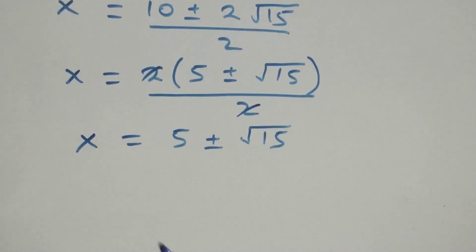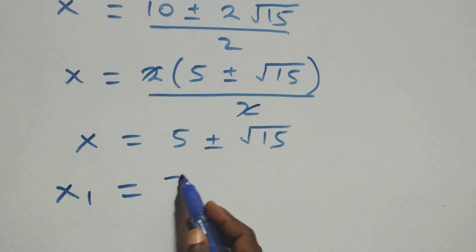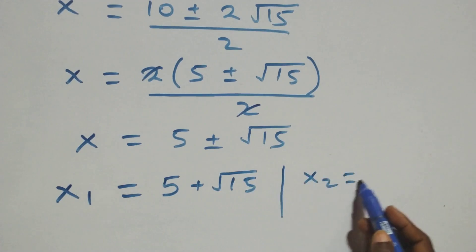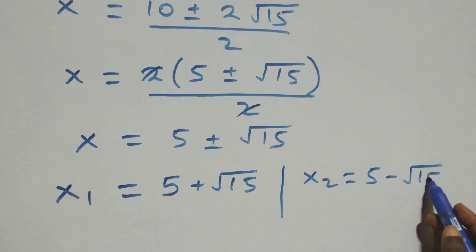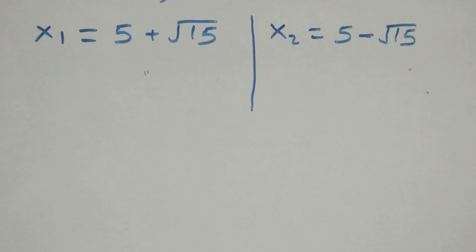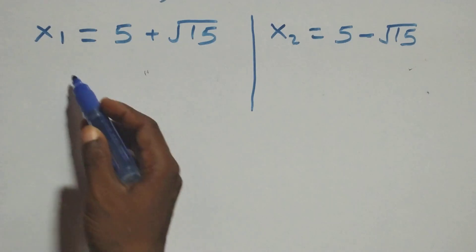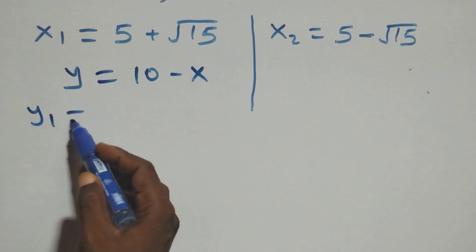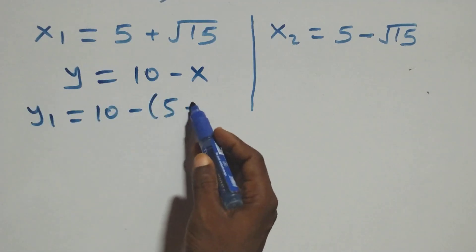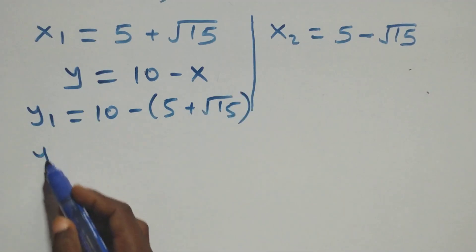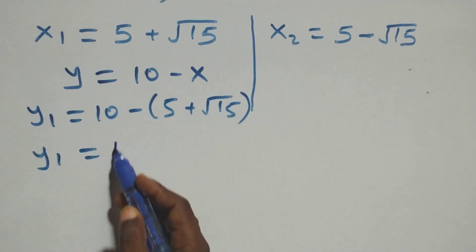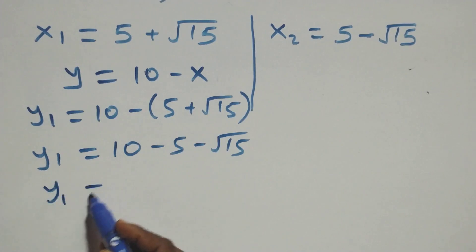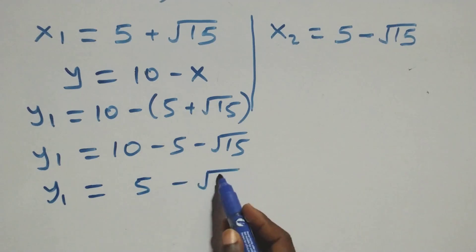We have two possible values of x: x1 equals 5 plus root 15, and x2 equals 5 minus root 15. Next, we find the value of y using the relation y equals 10 minus x. So y1 equals 10 minus x1, which is 10 minus (5 plus root 15). Opening the bracket gives y1 equals 10 minus 5 minus root 15, which is 5 minus root 15.